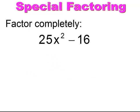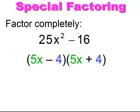Pause and try. Be careful here because 25x² is a perfect square, so it square roots to 5x. The answer is (5x − 4)(5x + 4).